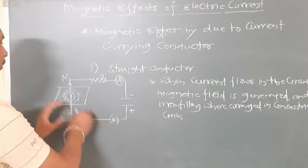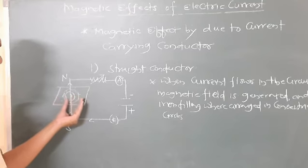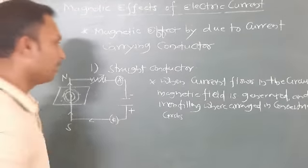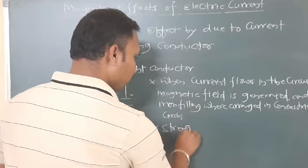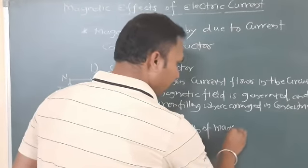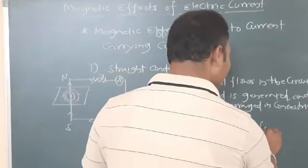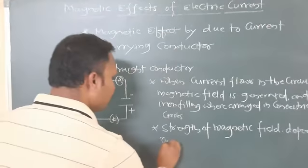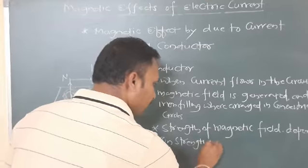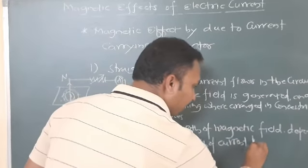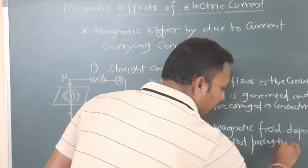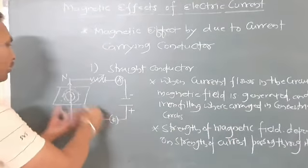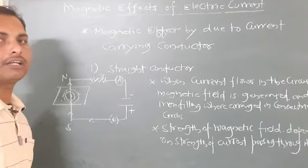The second point: the strength of the magnetic field depends on the strength of current passing through it. More current means more magnetic field; less current means less magnetic field.